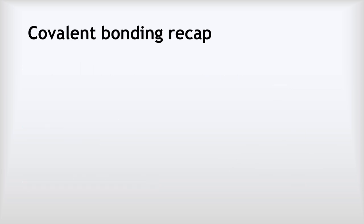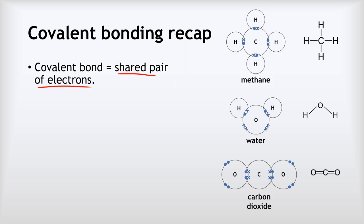So before we go any further, let's recap covalent bonding. A covalent bond is a shared pair of electrons and we can draw them like this. Sometimes we draw dot and cross diagrams where we represent that shared pair as a dot and a cross in the overlapping outer shells.